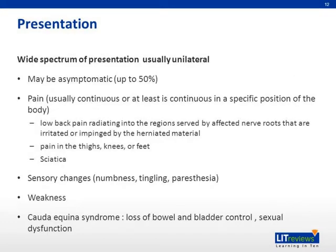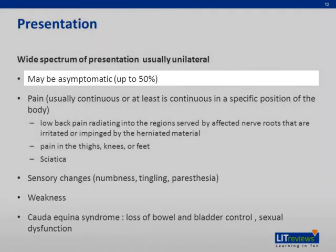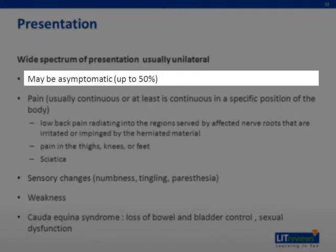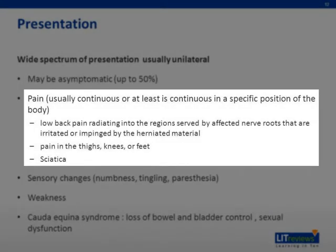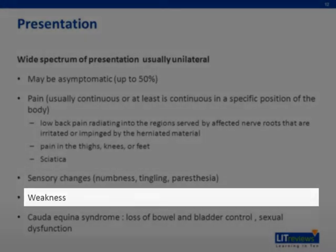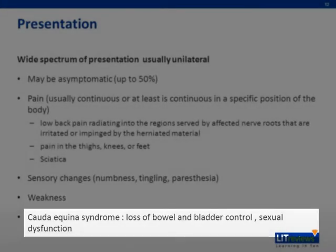This condition has a wide spectrum of presentation depending on the degree of herniation. It usually has unilateral involvement due to the presence of posterior ligaments, which favor posterolateral herniation. Herniations may be asymptomatic in up to 50% of cases, or may present with pain or a variety of neurological signs — for example, low back pain radiating into regions served by affected nerve roots, pain in the thighs, knees, or feet, sciatica, sensory changes, weakness, or even cauda equina syndrome, which may present with loss of bowel and bladder control as well as sexual dysfunction.